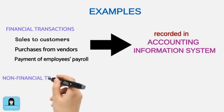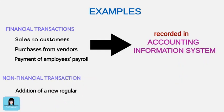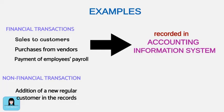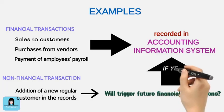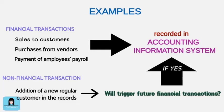An example of a non-financial transaction is the addition of a regular customer in the marketing and sales department's record. This is simply saving a new customer record in the company's customer files. In the accounting information system, a non-financial transaction is also recorded, provided that this transaction will result in future financial transactions. For example, there is no financial transaction yet at the time of adding the new customer, but this is still recorded because after a couple of days, the customer will start making orders which will result in financial transactions.